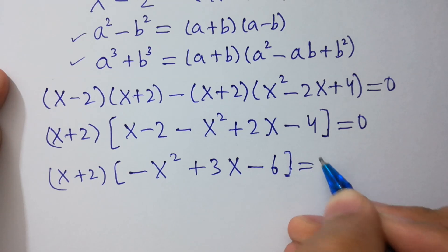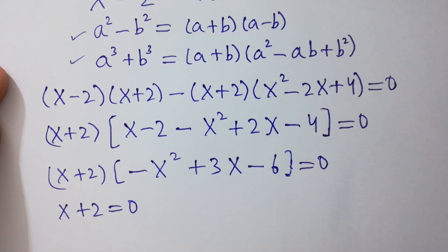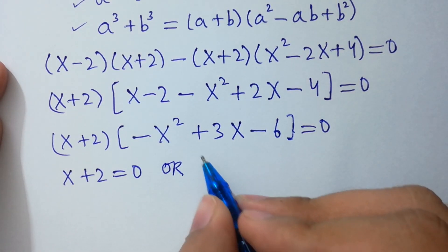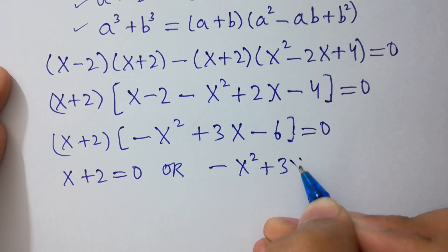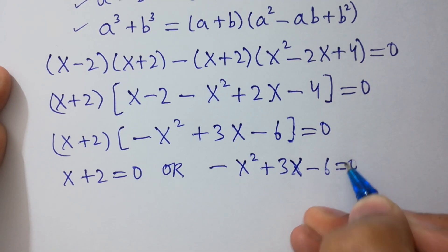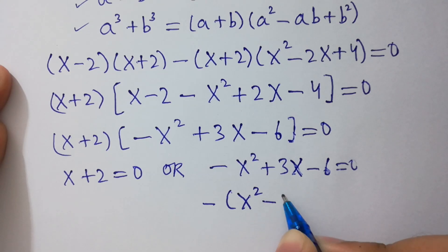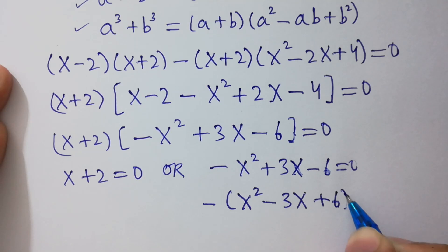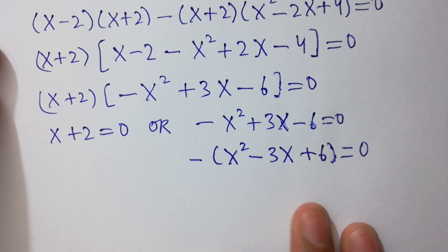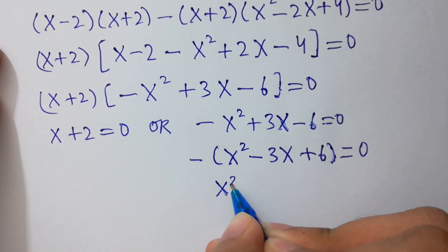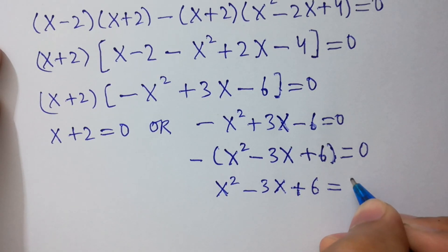So we can isolate x plus 2 equals 0, or minus x squared plus 3x minus 6 equals 0. Dividing both sides by minus, we get x squared minus 3x plus 6 equals 0.